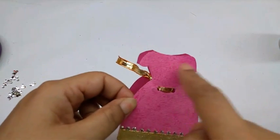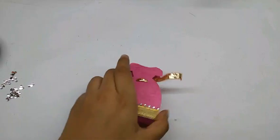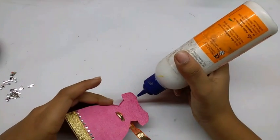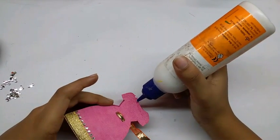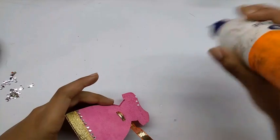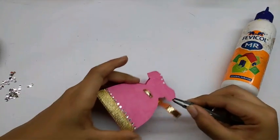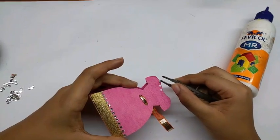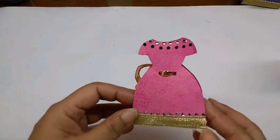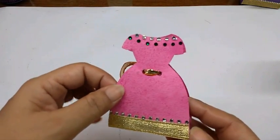Now I am going to decorate the bodice area. So I will just apply glue on the neckline area and stick the white studs on it followed by green. This is how it will look after it has been finished.